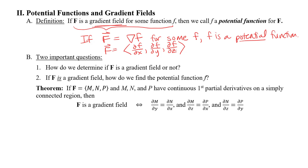There is a theorem that says if my vector field F has component functions with continuous first partial derivatives on a simply connected region, then F is a gradient field — and this is an if and only if statement, so the implication works both ways. Our textbook calls this the component test for determining whether you have a gradient field.